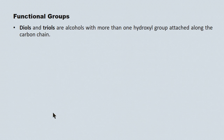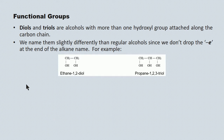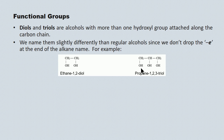Diols and triols are alcohols that have more than one hydroxyl group, and we're responsible for these as well. They're named slightly differently — we don't drop the E in the alkane root. For example, a two-carbon chain with two hydroxyl groups attached becomes ethane-1,2-diol. A three-carbon backbone with three hydroxyl groups attached is propane-1,2,3-triol.